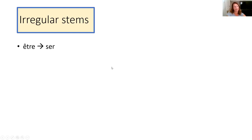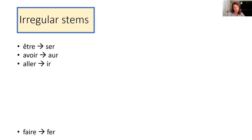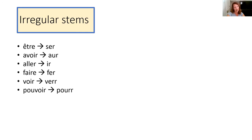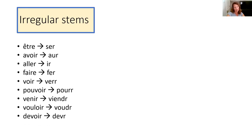So here are your irregular stems. Être (to be) goes to 'ser'. Avoir (to have) goes to 'aur'. Aller (to go) goes to 'ir'. Faire (to do/make) goes to 'fer'. Voir (to see) goes to 'verr'. Pouvoir (to be able to) goes to 'pourr'. Venir (to come) goes to 'viendr'. Vouloir (to want to) goes to 'voudr' — you know that one from 'je voudrais'. Devoir (to have to) goes to 'devr'. And savoir (to know a fact) goes to 'saur'.